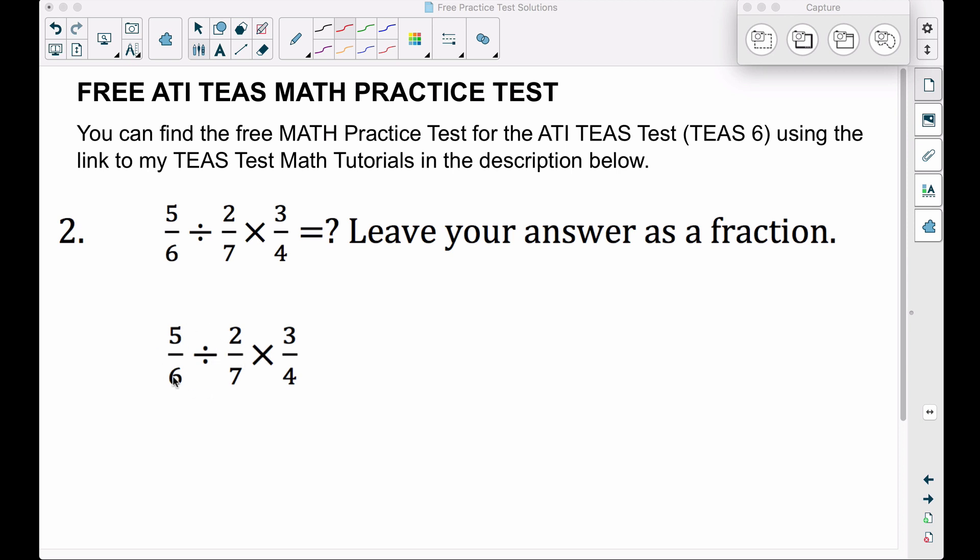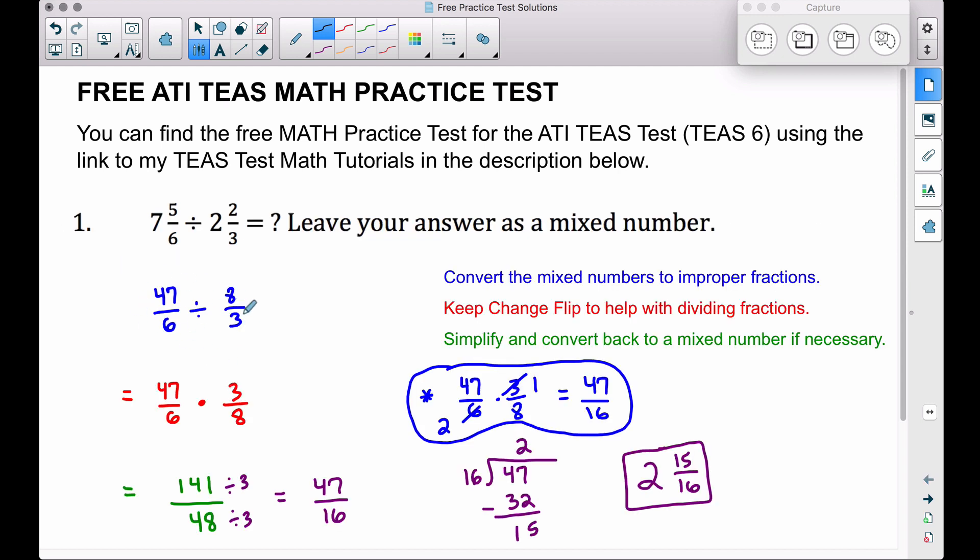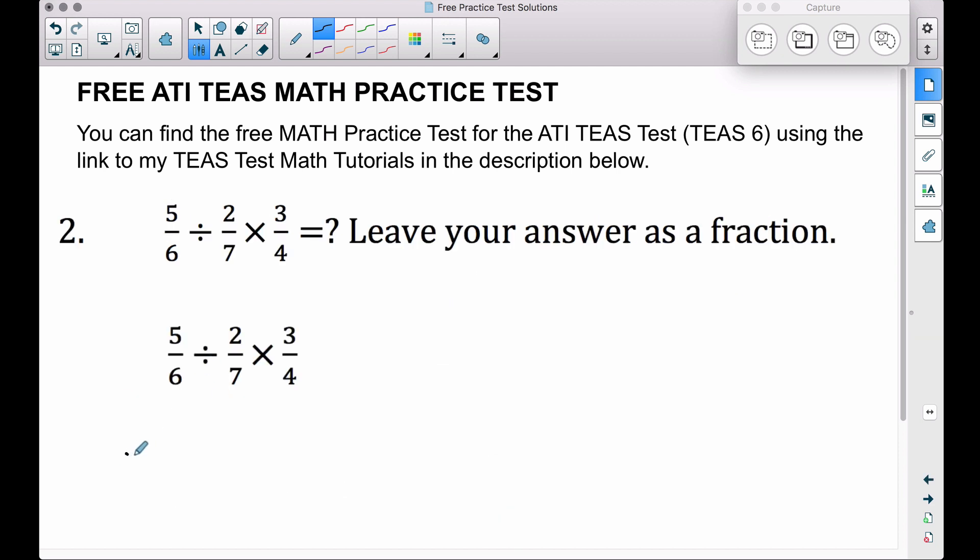So therefore we want to divide these two fractions first, and if you saw number one that I worked out previously, we actually had to divide those mixed numbers but we did turn this into a multiplication problem. Keep, change, flip. So therefore this part right here I'm going to keep this part 5 over 6, change your division to multiplication, and then flip this fraction right here. This is the same thing as multiplying by the reciprocal.